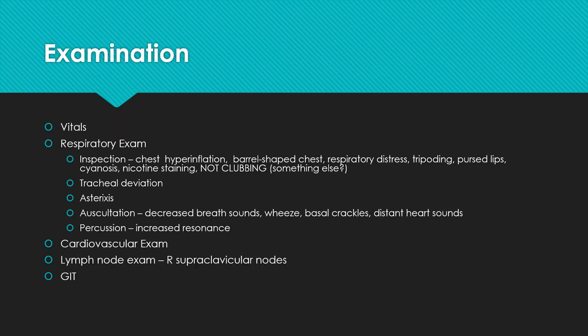Moving on to examination. First, take vitals, looking particularly at respiratory rate and oxygen saturations, then do a respiratory exam. Depending on how progressed her disease is, you'd be expecting some chest hyperinflation or a barrel-shaped chest. Patients can be in respiratory distress, though unlikely at the GP. Look at whether they can speak in full sentences, accessory muscle use, pursed lip breathing, cyanosis, nicotine staining on the hands, and whether they have clubbing — clubbing actually points towards a different disease process.